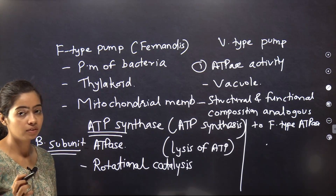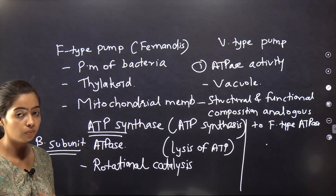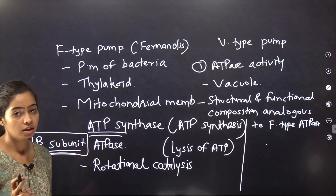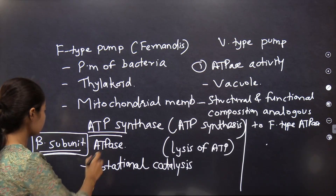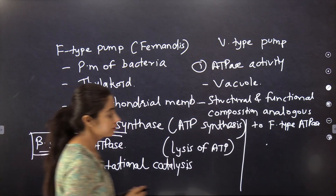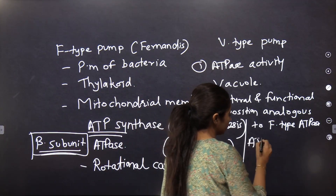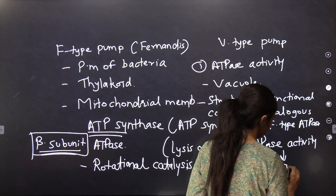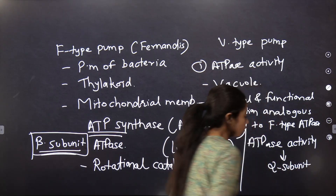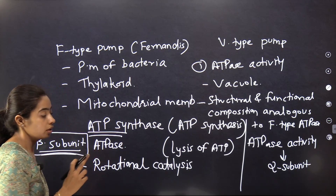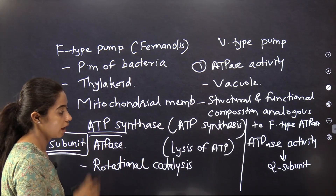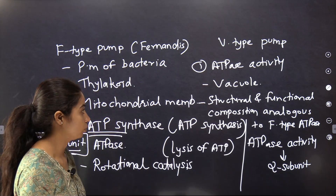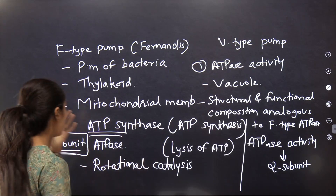In the F-type pump, ATPase activity is present in the beta subunit. Whereas in the V-type pump, ATPase activity is present in the alpha subunit. That is the major difference between the two pumps.